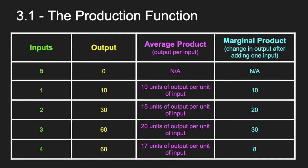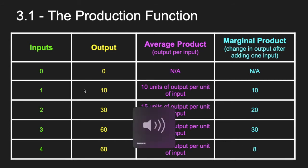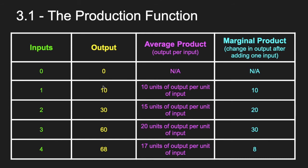In this case, we're going from 0 to 4 units of input, and our output goes 0, 10, 30, 60, 68. So we're adding more output as we hire more laborers or buy more raw materials — whatever these inputs might be. For average product, we take the total output and divide by total input. At the first input, we generate 10 units of output, so 10 over 1 equals 10 — that's our average product. At the second input, output is 30, so 30 over 2 equals 15.